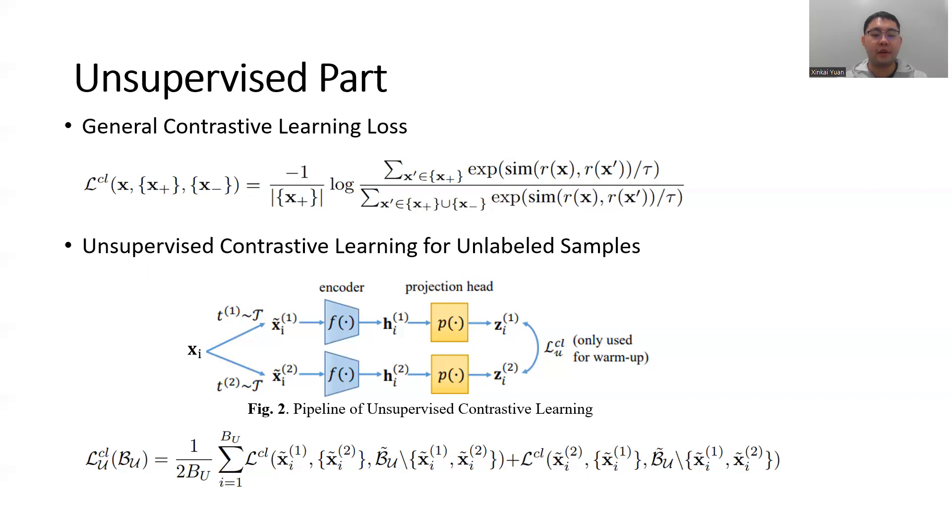Now, take a look at figure 2. For the contrastive learning of the unlabeled sample, we obtain two different augmentations of a certain image xi. They are considered as positive pairs. Namely, they are the only positive sample of each other, and all other image augmentations are considered as negative samples.